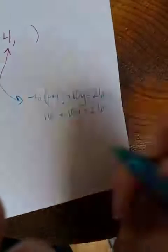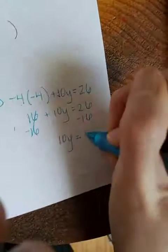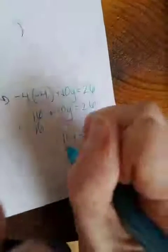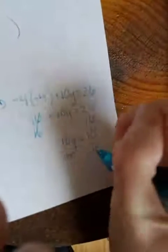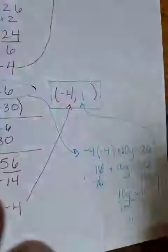So to solve for y, I'm going to subtract 16. I get 10y equals 26 minus 16 is 10. I'm going to divide both sides by 10. 10 divided by 10 is 1. You just found the y value of your answer. Again, please do not think the answer is always negative 4, 1.